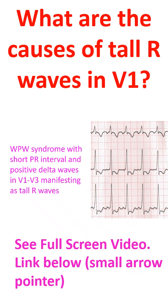Tall r waves in V1 may also occur in Duchenne muscular dystrophy and hypertrophic cardiomyopathy. Right bundle branch block and accessory pathways causing pre-excitation of posterior or lateral walls can also manifest tall r waves in V1.